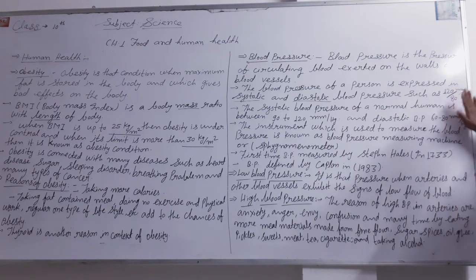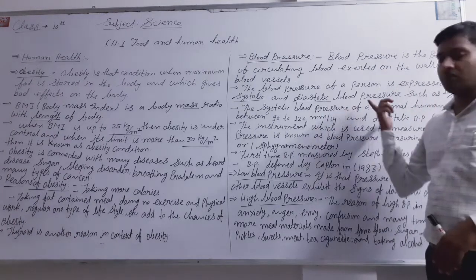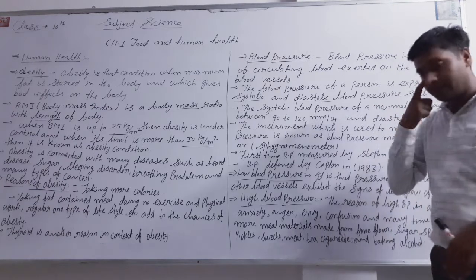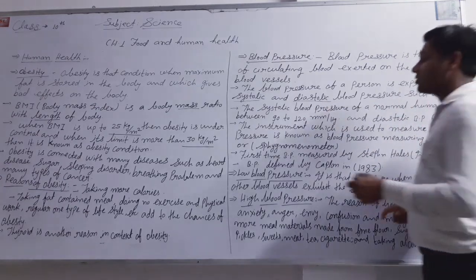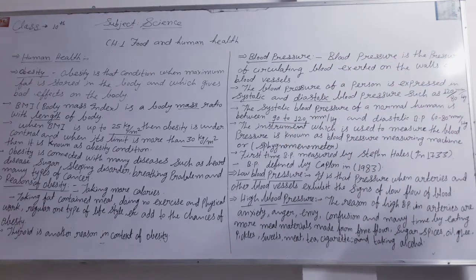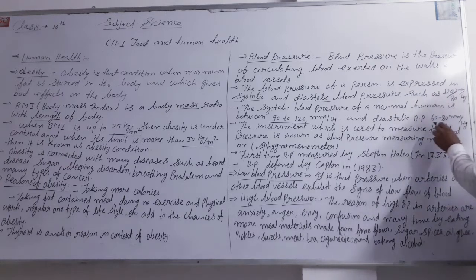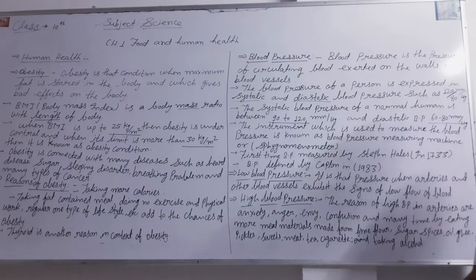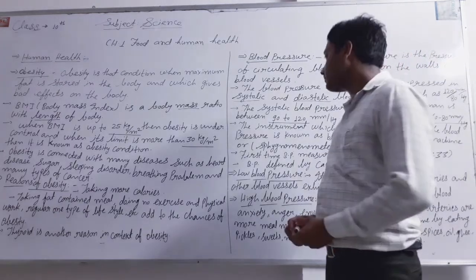What is the normal limit of systolic and diastolic blood pressure? For a normal human being, the systolic condition is 90 to 120 mmHg, which is considered normal. And diastolic condition is 60 to 80 mmHg, which is considered the normal condition.